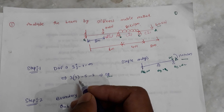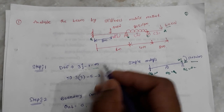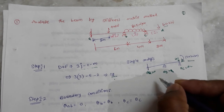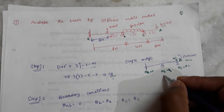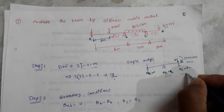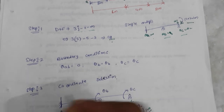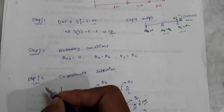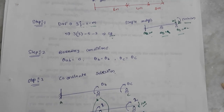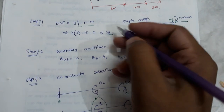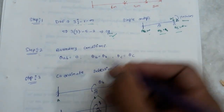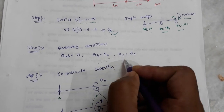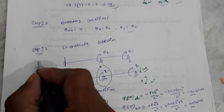Step one is degree of freedom. We need to find the number of unknown displacements in the structure. We have two unknown displacements: theta-a equals zero because it's a fixed support, while theta-b and theta-c are unknown. We check boundary conditions and identify two unknown displacements: theta-b and theta-c.